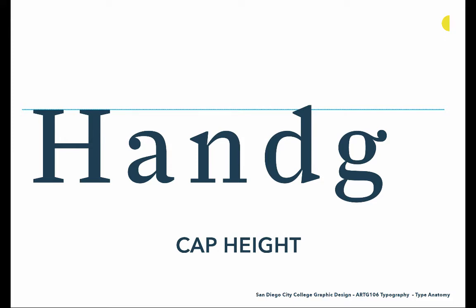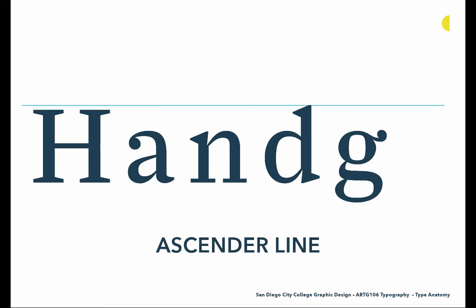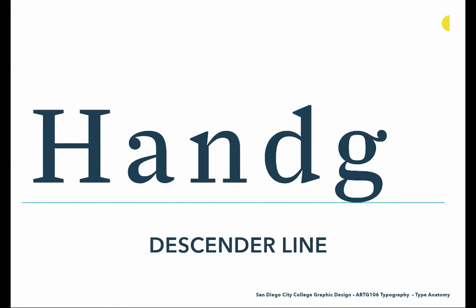Then we have the cap-height — another imaginary line determined when the typeface is designed — and that is how high all of the capital letter forms will go, so there's a rationality and consistency to their height. Then we have the ascender line, which is the height that all of the ascenders will go to, so there's consistency in how high all of those ascending strokes will reach. And of course there's also a descender line — an imaginary line that determines how far below the baseline all of the descenders will go.